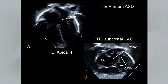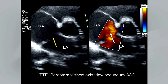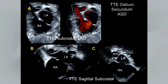Some examples of atrial septal defects from the document: an ostium primum ASD imaged by transthoracic echo in the standard pediatric display, seen in the apical four-chamber and subcostal LAO views, with a common atrioventricular valve visible in the subcostal LAO view. A second example shows an ostium secundum ASD on transthoracic echo of a pediatric patient in the parasternal short axis view, with a large defect, a deficient anterior aortic rim, and left-to-right color Doppler flow.